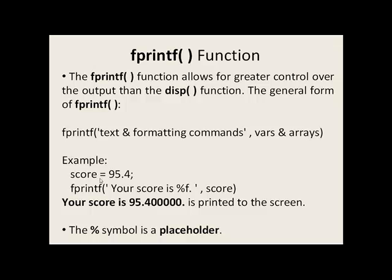So for example we say score is 95.4. Inside the single quotes we have your score is and then we come to a percent sign. When we come to a percent sign we look over to the right and see what variable or array is listed on the right. In this case it's score which has the value of 95.4.